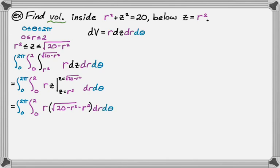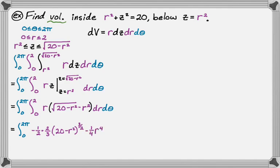Now integrating with respect to r. For the term r times radical 20 minus r squared, using u substitution with u equals 20 minus r squared, we pick up a factor of negative one-half, giving negative one-third times 20 minus r squared to the three-halves. For the term negative r cubed (distributing the r), we get negative one-fourth r to the fourth. Then r is evaluated from zero to two, with d theta still remaining.